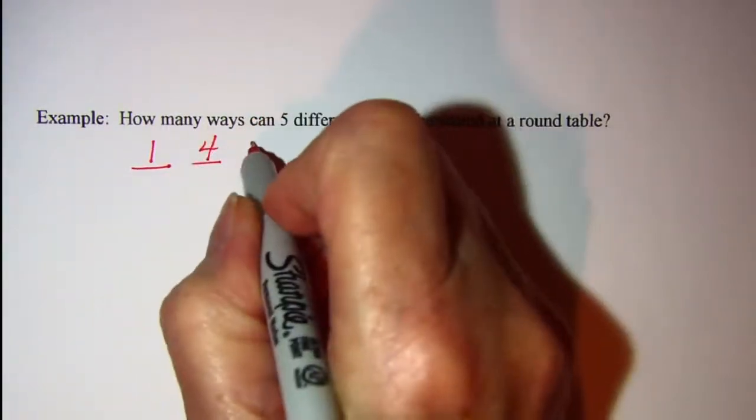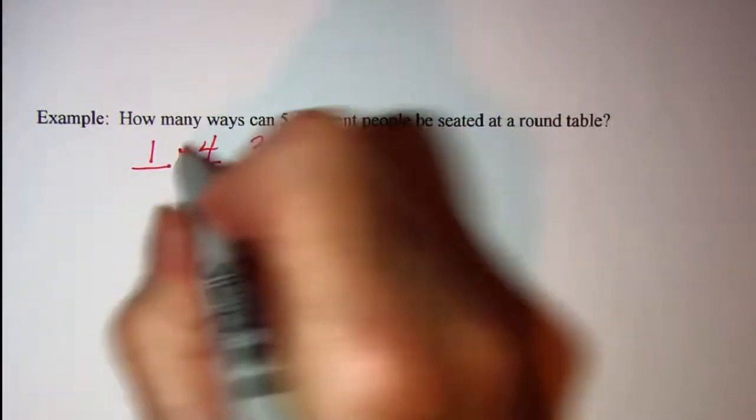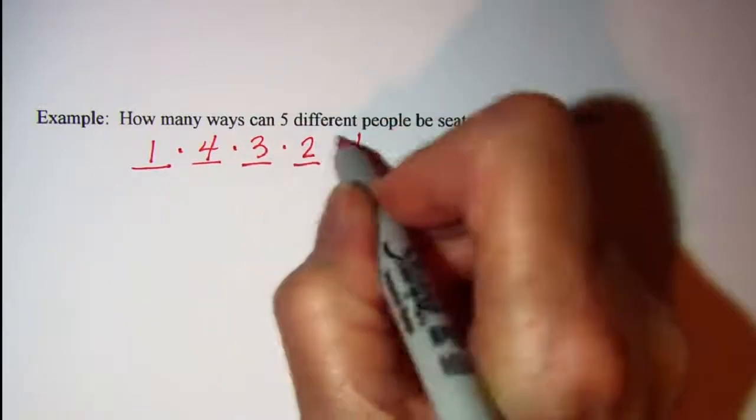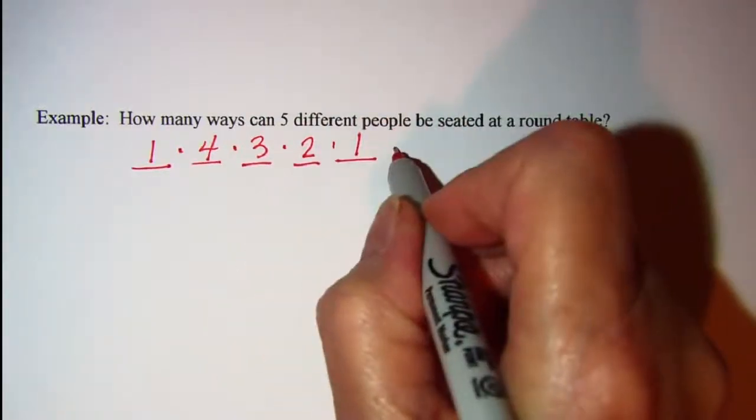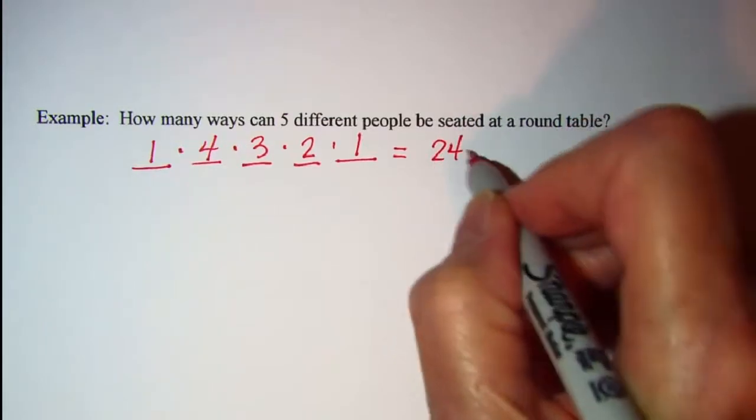And then three, and then two, and then one. And our fundamental counting principle says these are all multiplied. So I have a total of 24 ways.